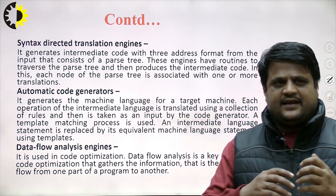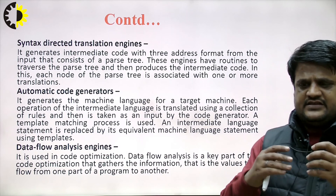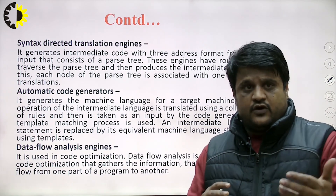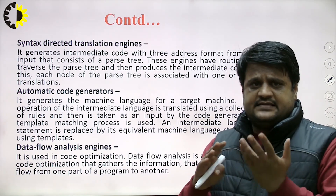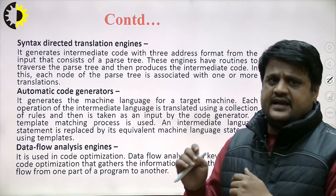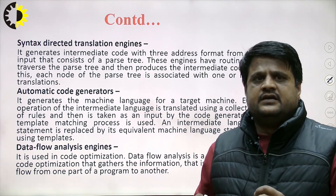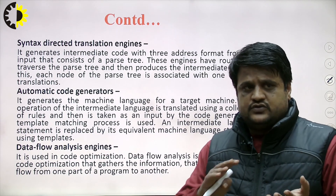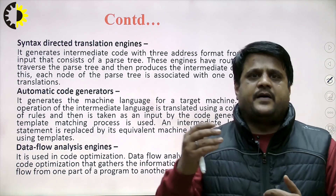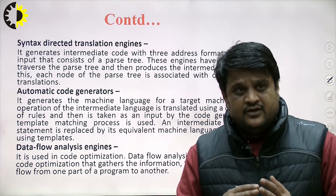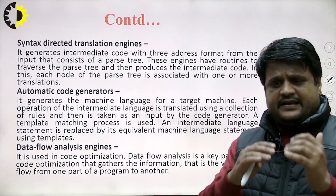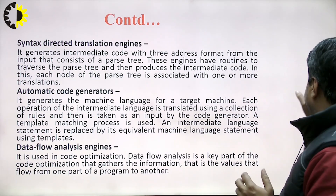The fifth tool is the data flow analysis engine, which is used inside code optimization. Data flow analysis is a key part of code optimization that gathers information about values that flow from one part of the program to another part of the program. These are all the various compiler construction tools.